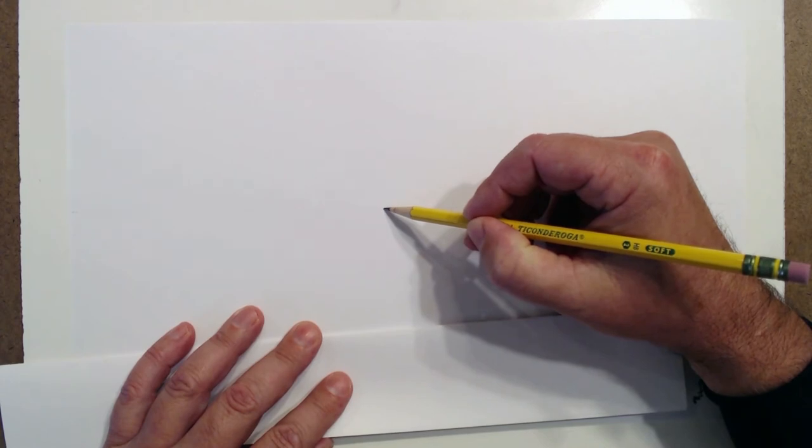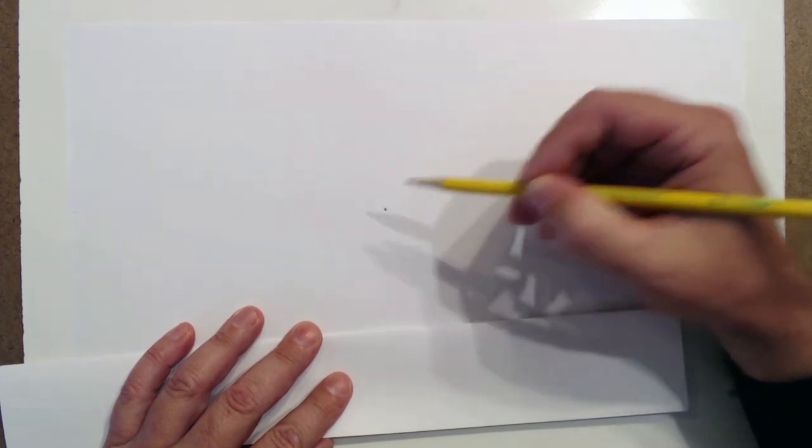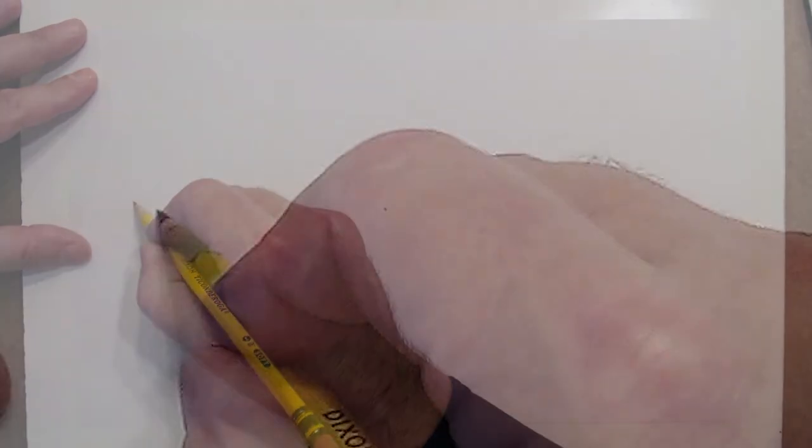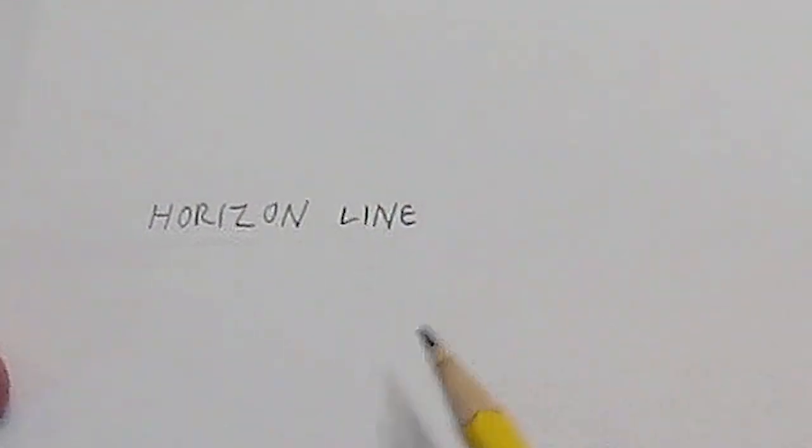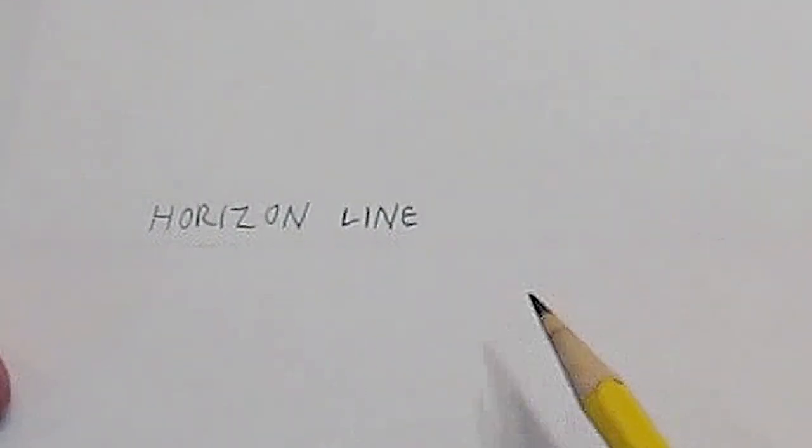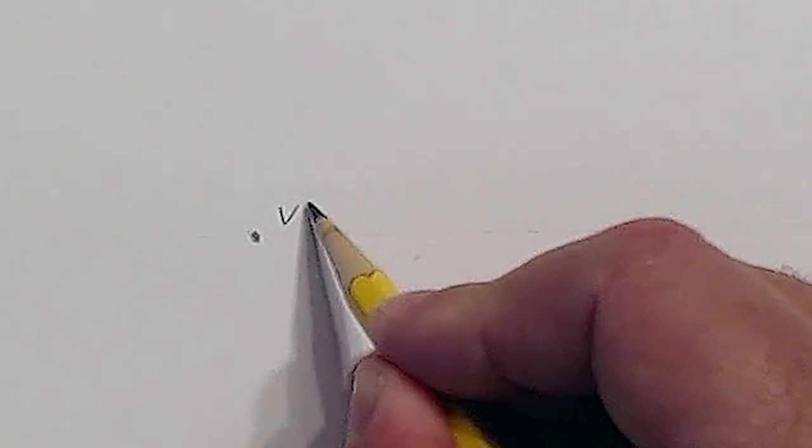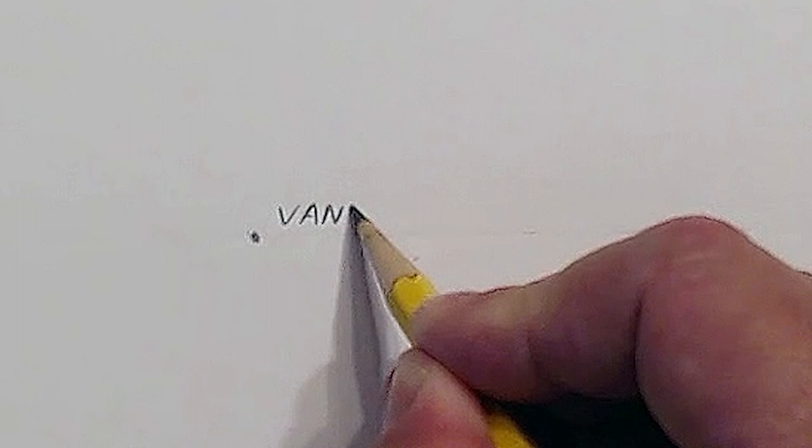Then what I want you to do is somewhere near the center, I want you to make a little dot right there. That's going to be our vanishing point. For our purposes right now, I want you to go ahead and label this. That line is going to be labeled the horizon line, so I want you to write that down. I want you to label it: this is the vanishing point, so I want you to label it. Of course, we won't always be doing that, that would be ridiculous, but for your sake of learning right now, I want you to do that.